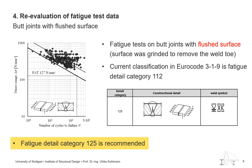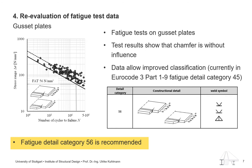To sum up, according to our study we can raise the fatigue strength for this detail. Another example shown on this slide presents all the test data in the database for gusset plates. The current classification is fatigue detail category 45 in Eurocode 3 part 1-9. Based on our study, we can recommend fatigue detail category 56. The analysis of this detail also shows that the chamfer and the angle of the chamfer are without influence on the fatigue strength.